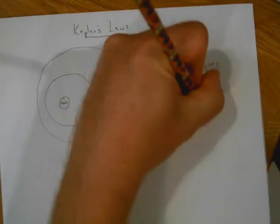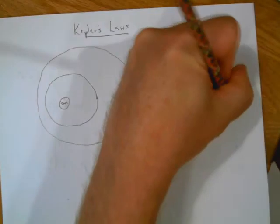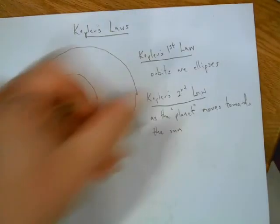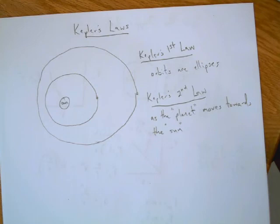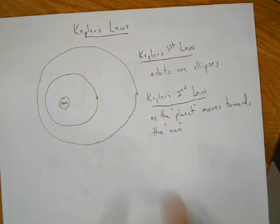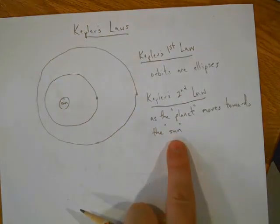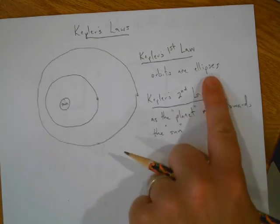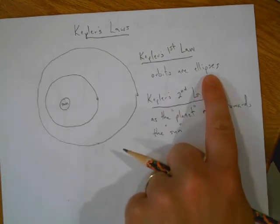As the planet moves towards the sun - and I'm going to say sun in quotes too, because it doesn't have to be the sun, it's really whatever it's orbiting around. You know, if you have things orbiting the earth, they will all orbit in ellipses. Again remember, a circle is a special ellipse.